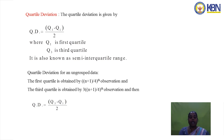For ungrouped data, the first quartile is obtained by the size of the (n+1)/4th item, and the third quartile is obtained by 3(n+1)/4th item. The quartile deviation is (Q3 − Q1) / 2.